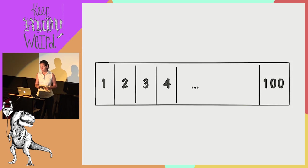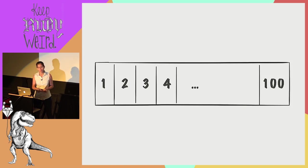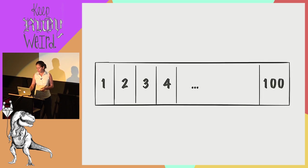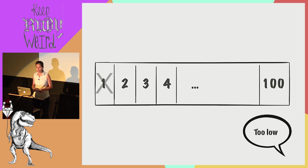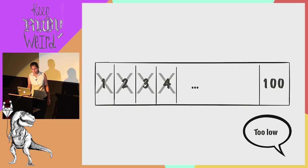For a different example: I'm thinking of a number between one and a hundred, and I'm asking you to guess it in the fewest tries possible. With every guess I'll tell you if you're too low, too high, or just right. If we took the approach of asking: is it one? Too low. Is it two? Too low. Three — too low. Four — still too low. This is not very efficient.